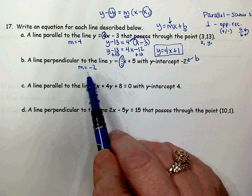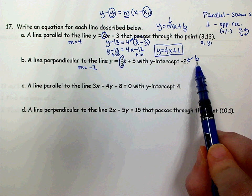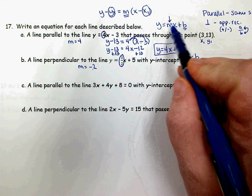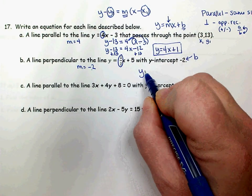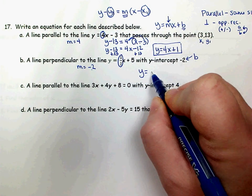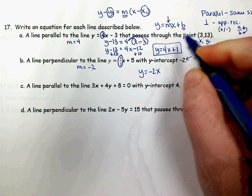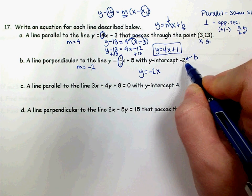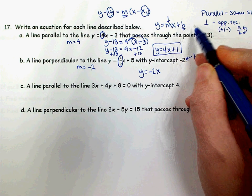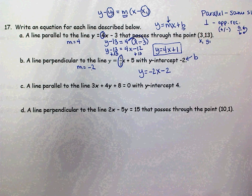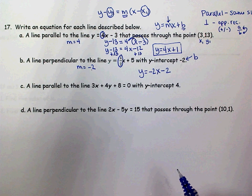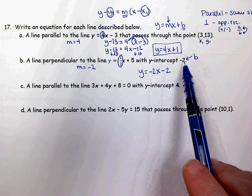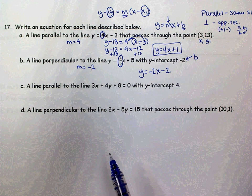Now that I know my m and my b value, I'm ready to write the equation in slope-intercept form. So y equals negative 2x — negative 2 goes in for m — and my b value is negative, so instead of writing plus negative 2, I'll write minus 2. My slope is negative 2 and my y-intercept is negative 2.